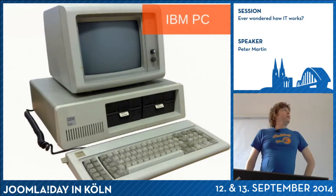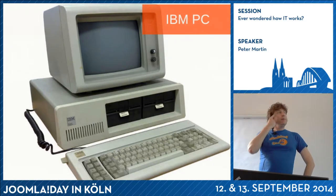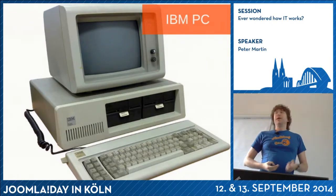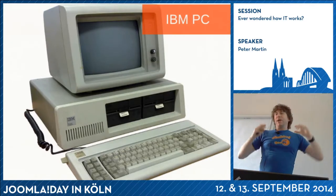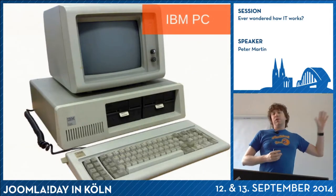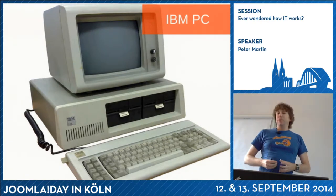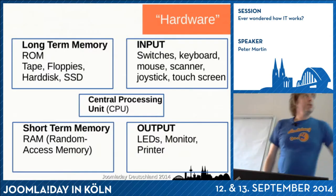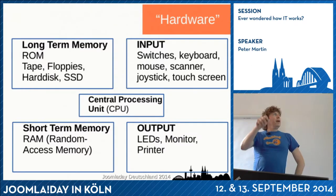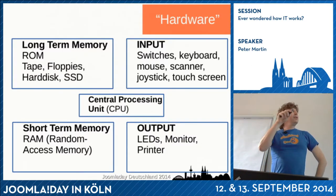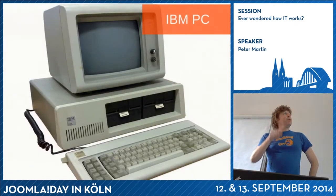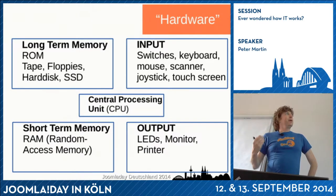This is the first IBM PC, the 5150, from 1981. This is the basis of our modern computing technology. This was the first IBM computer and everything derived from it is called IBM Compatible. If you look at the computer, there's a central processor unit — the CPU, in this case the AT88, which was from Intel, and they still make these kinds of CPUs today.